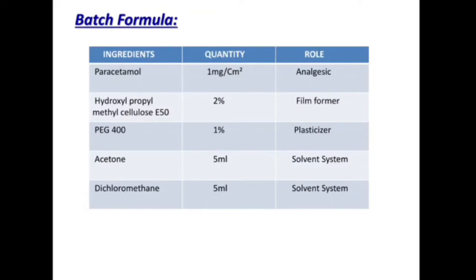Batch formulation: the ingredients required are paracetamol, hydroxypropylmethylcellulose, PEG400, acetone, and dichloromethane. Paracetamol is used at 1 mg per centimeter and acts as an analgesic. Hydroxypropylmethylcellulose is required in 2% quantity and its role is film formation. PEG400 is 1% and acts as a plasticizer. Acetone is required in 5 ml and serves as the system solvent. Dichloromethane is also required in 5 ml and also performs the role of system solvent.